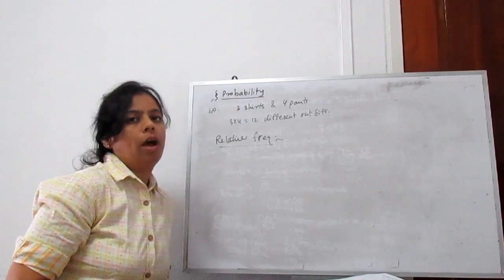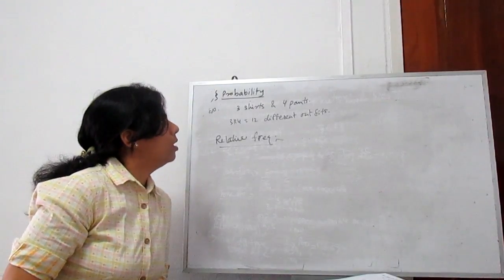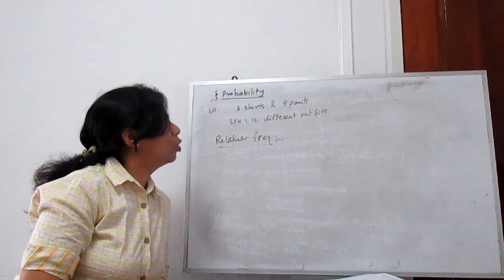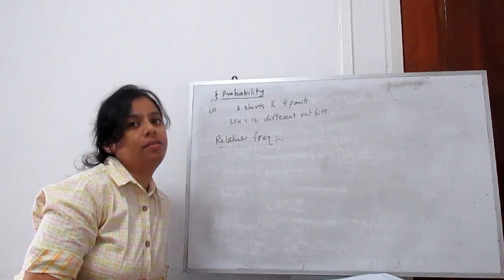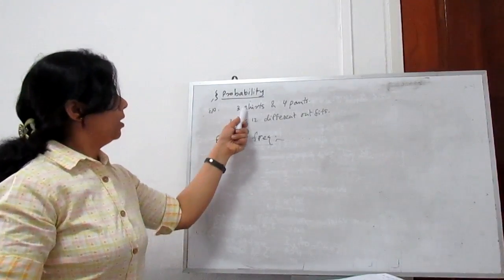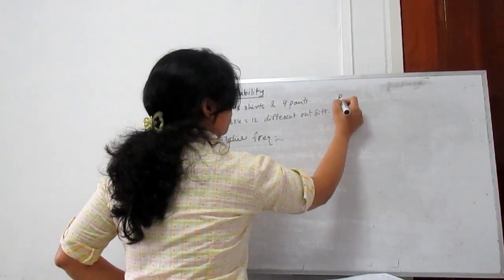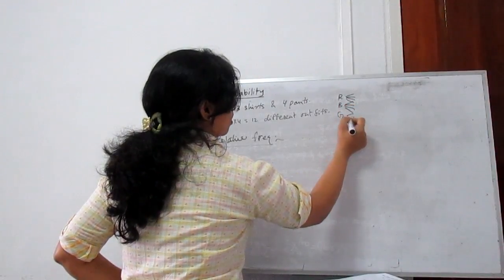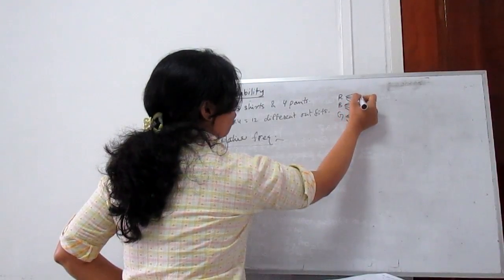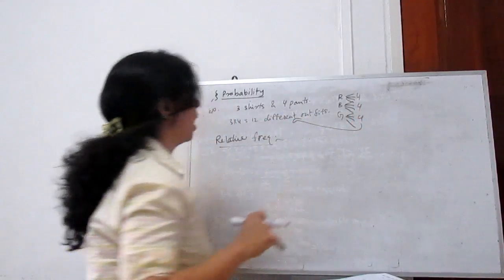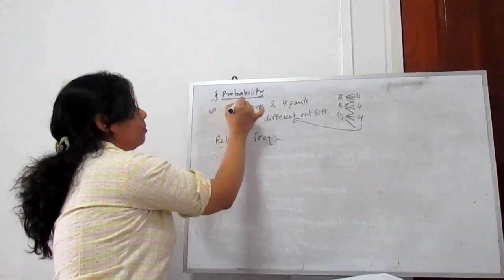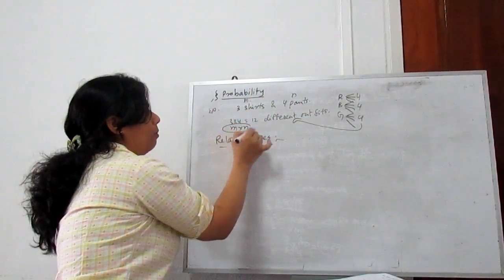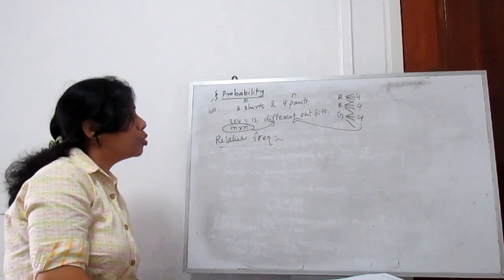How to calculate the total number of outcomes: if we have 3 shirts and 4 pants, total number of combinations is 3 times 4 equals 12 different outfits. Each shirt — for example red, blue, grey — can be combined with 4 pants, giving 4, 4, and 4 combinations. So total outfits are 12. If there are n possibilities of one type and n of another, total outcome is n times n. You should always remember this.